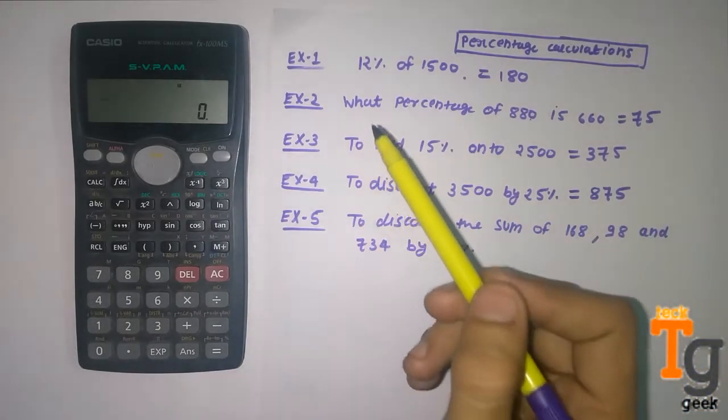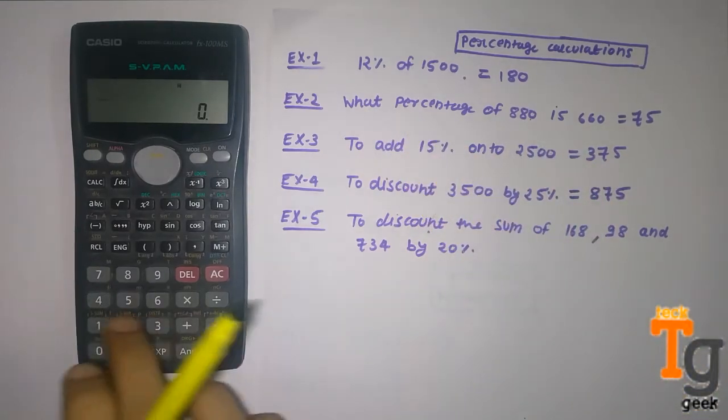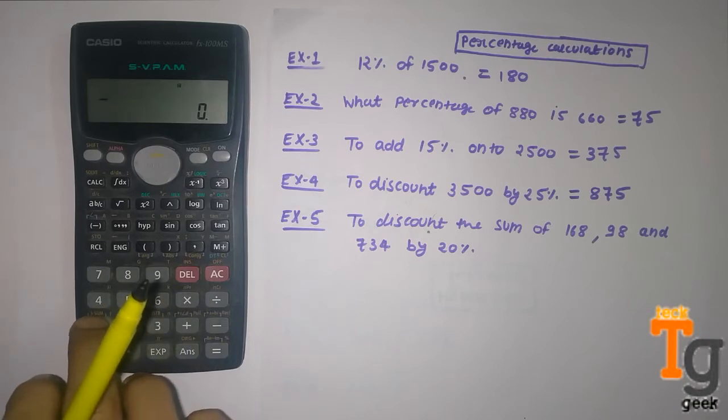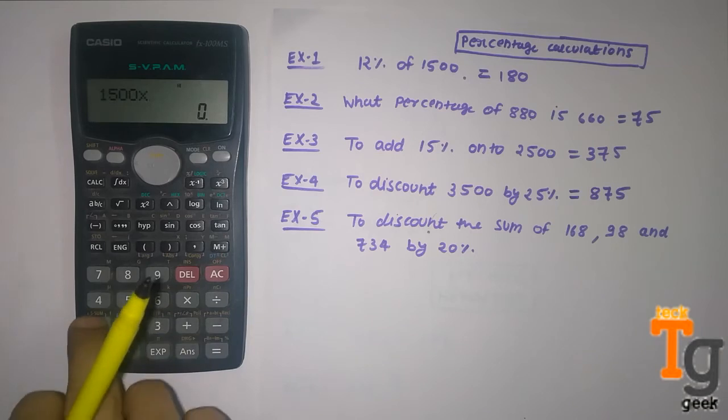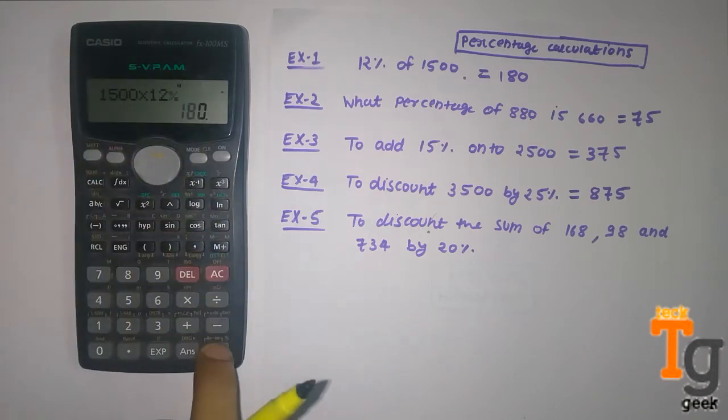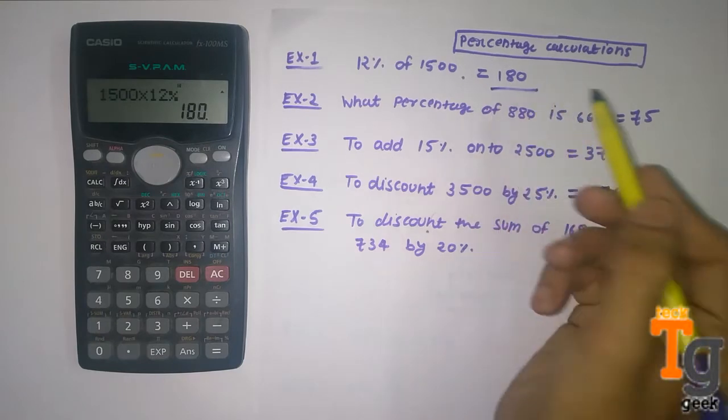So first question is 12% of 1500. What you have to do: 1500 times 12 and then you have to press percent and then you get your answer.